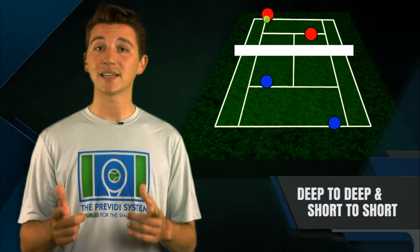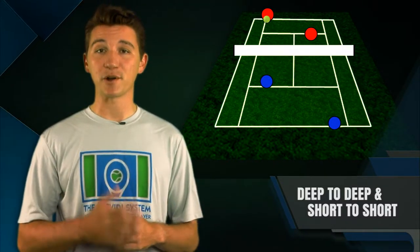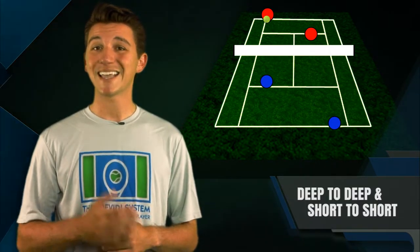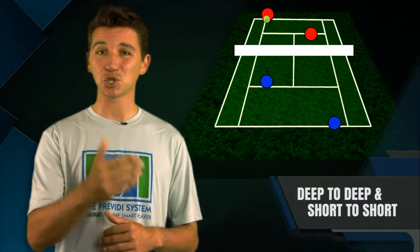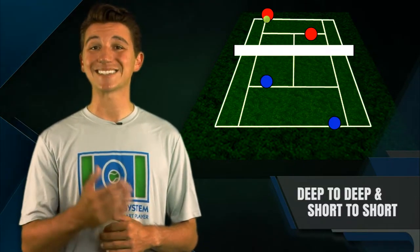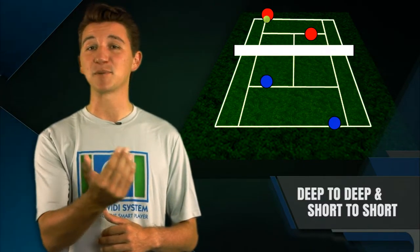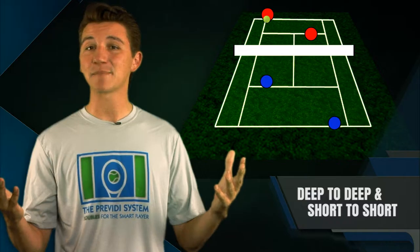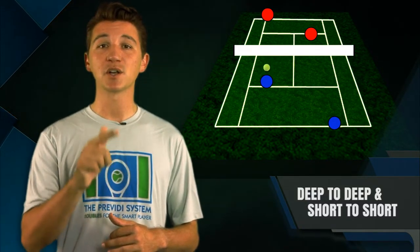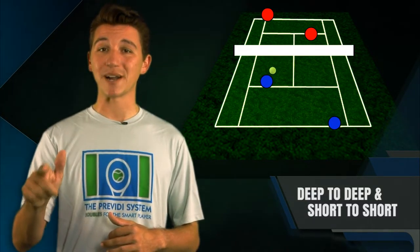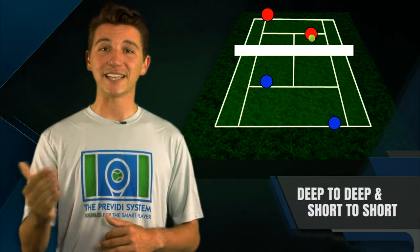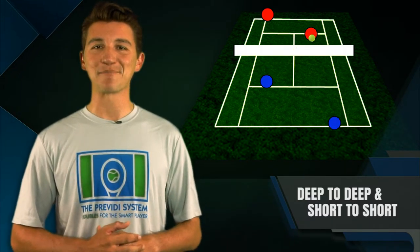Short to short is a situation where my net partner, the hunter, has a chance to do something good with the ball. If they went short to deep to the other team's helper, all of a sudden the helper has time to keep the ball in play and our attack may have been thwarted. So we're going to have our hunter go short to short at the other team's net person so that they have less time to react and so that we win that point.